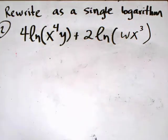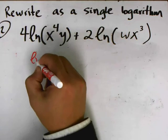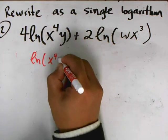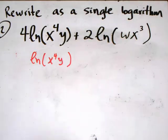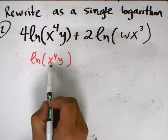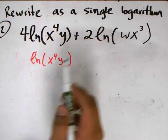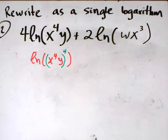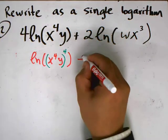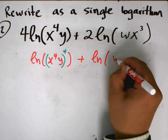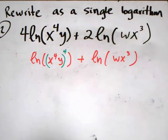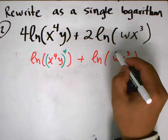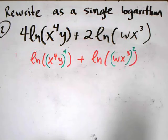Applying the power rule, this becomes the natural log of x to the 4th times y, where this 4 becomes the exponent. I have to be careful with a combination like this — when it's already a log of something times something else, the power applies to the entire expression inside the log. Similarly, this becomes plus the natural log of w times x to the 3rd, all raised to the 2nd power.